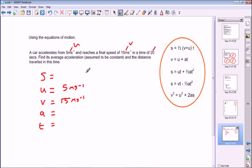In a time of 20 seconds, so we know that the time is 20 seconds, so we can put that in immediately as well. Now we've got three. We can use these equations of motion which I've listed over here to solve the problem. So what does it ask us to do?